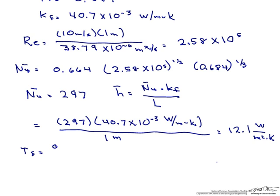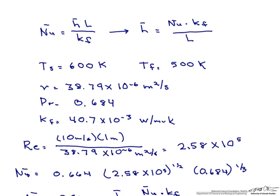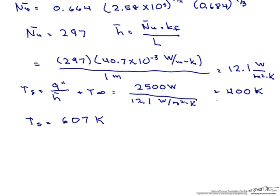Now we have everything that we need to solve for our surface temperature, which is our heat flux divided by our average heat transfer coefficient plus the temperature of our fluid. So that equals 607 K. So we go back to see what we guessed our surface temperature to be. And we guessed it to be 600 K. Our actual surface temperature is very close to that, or 607 K. The property change between 600 and 607 K is minimal. Therefore, we can use this as our answer and congratulate ourselves on a good guess for the surface temperature.